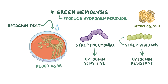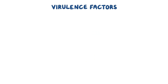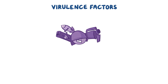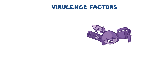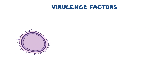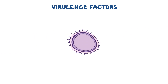Now, strep pneumoniae has a number of virulence factors that are like assault weaponry that help it attack and destroy the host cells, and evade the immune system. First, strep pneumoniae is encapsulated, meaning it's covered by a polysaccharide layer called a capsule.